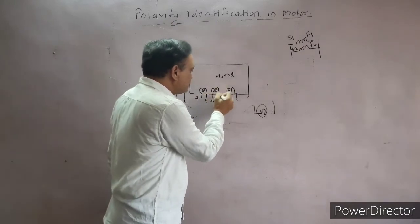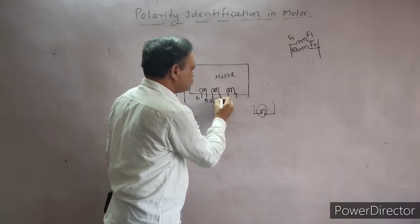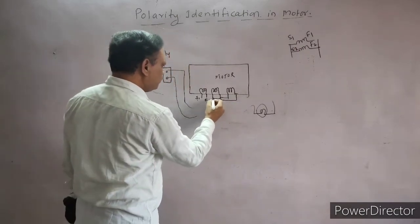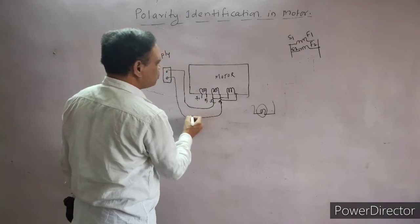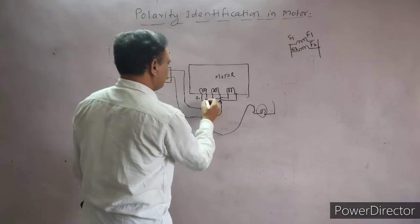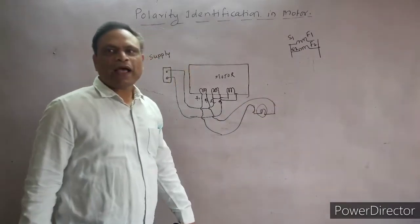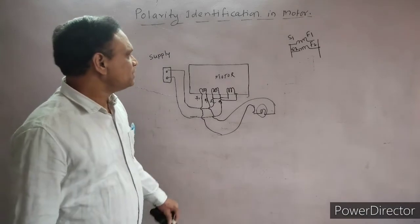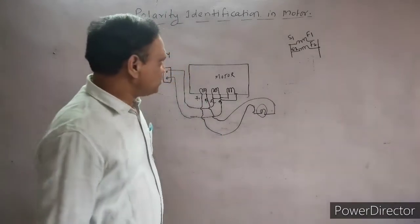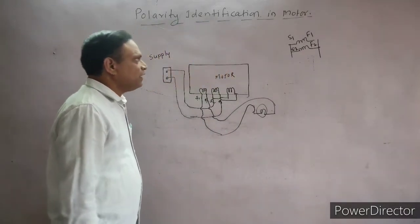We keep this terminal fixed and connect the lamp across the third coil pair. We connect the power supply to these two terminals and connect the lamp across the third coil. Now say the lamp has not glowed. That means we have connected in series opposition — S1 is connected to F2 and F1 is connected to S2 — which is a reverse connection.